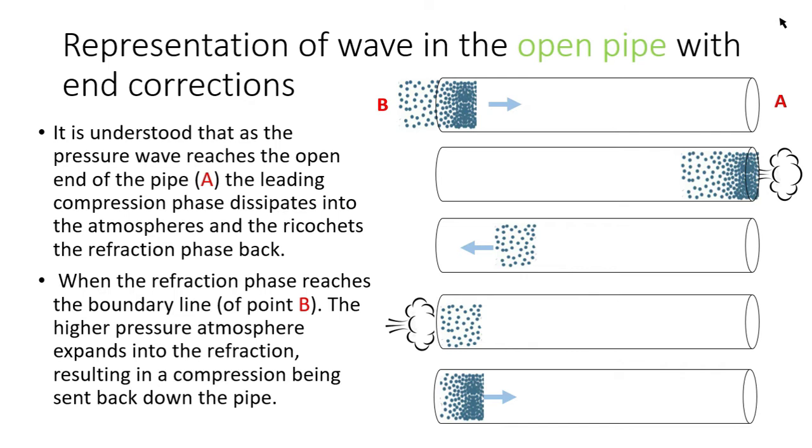Okay, again the model is understood to occur at the boundary lines where the open pipe meets the atmosphere. So it's this idea that in an open pipe as that sound wave propagates through the pipe it gets to the far end, that compression phase dissipates into the atmosphere and it ricochets that refraction aspect of the wave back down the pipe. The pipe gets to the end and the higher pressure atmosphere floods into that refraction and creates another compression wave.